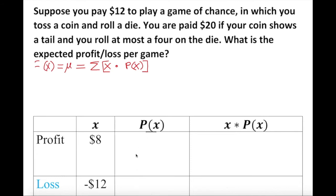Now the probability of x — this is the crucial and tricky part. There is information given in the problem: you are paid $20 if your coin shows a tail and you roll at most 4 on a die. So it seems like we have a coin and a die going on here.